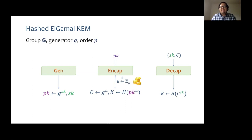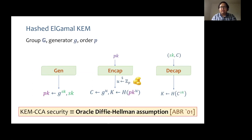The standard notion of security for this scheme is CCA security. As pointed out by Abdalla et al., this security notion for hashed Elgamal can be represented as a succinct assumption called the Oracle-Diffie-Hellman assumption, or ODH. Therefore, we are just going to talk about ODH from now on.